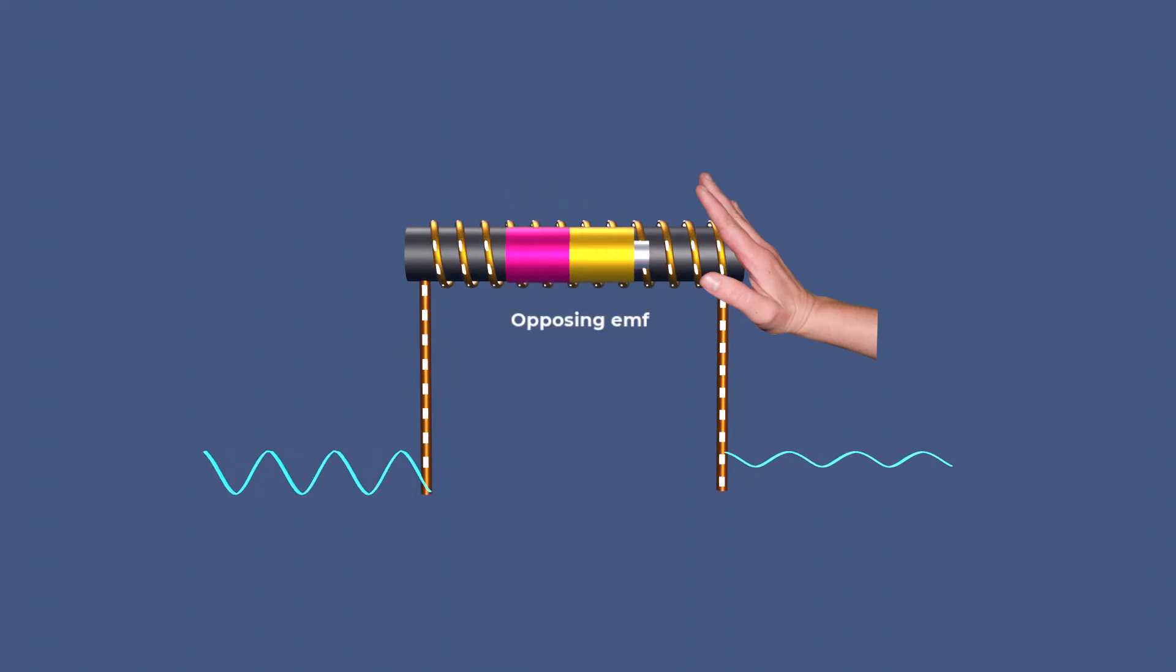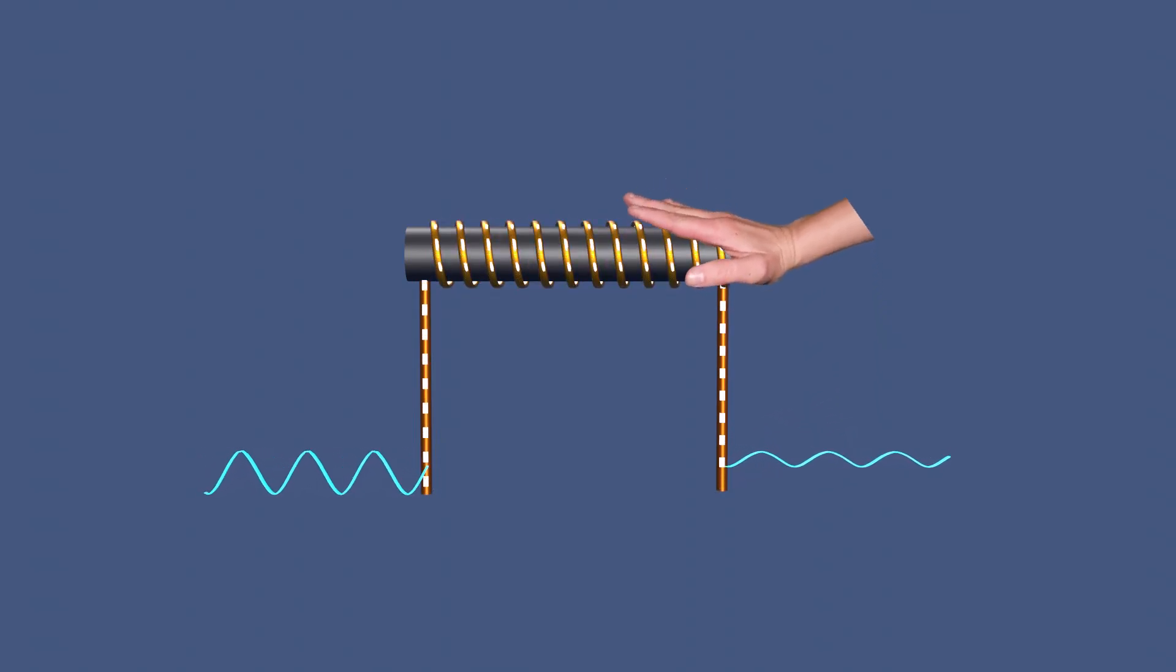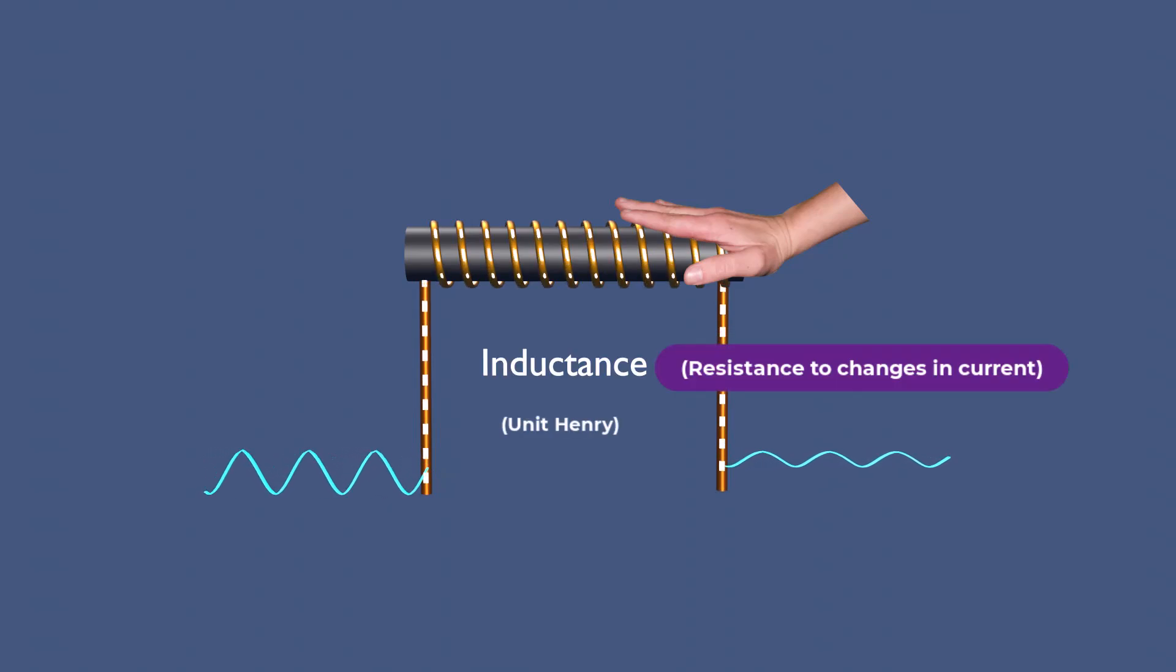This opposition stabilizes the current flow in the circuit and helps manage fluctuations, contributing to smoother operation. The inductor's ability to resist changes in current is called inductance.